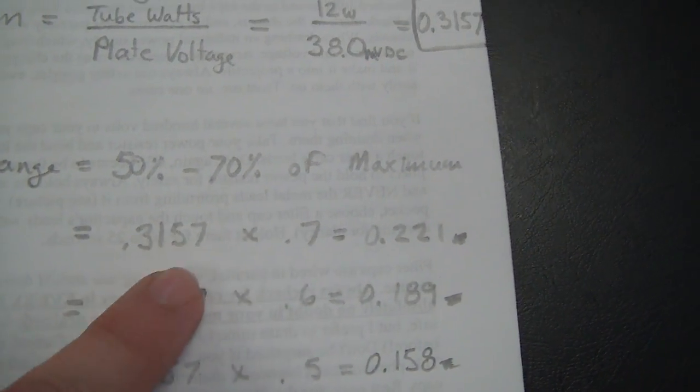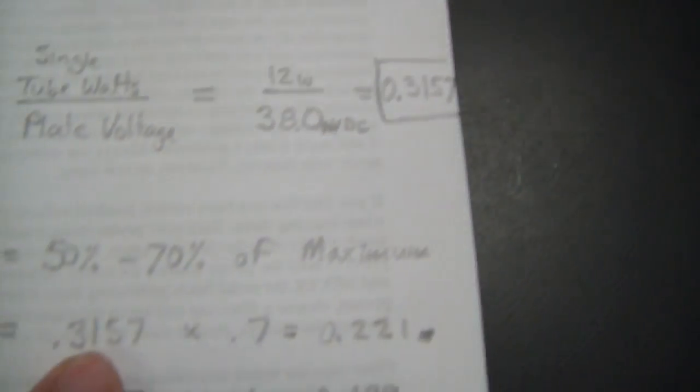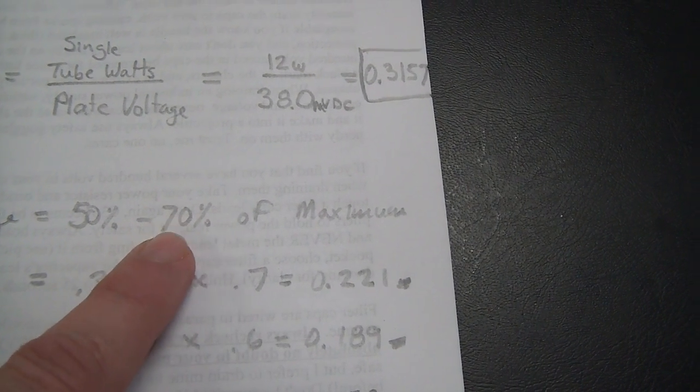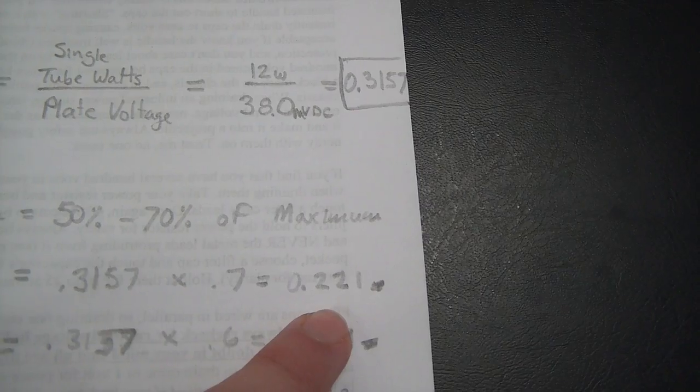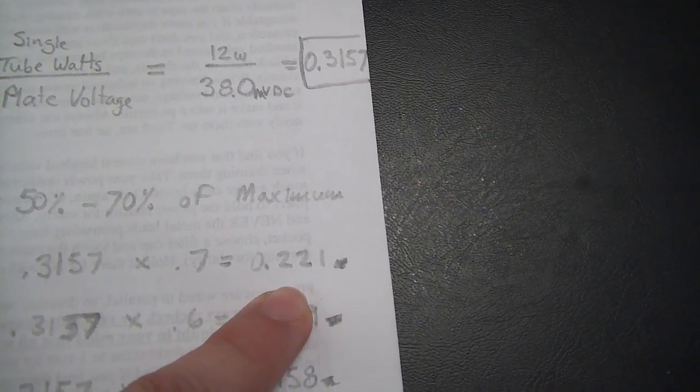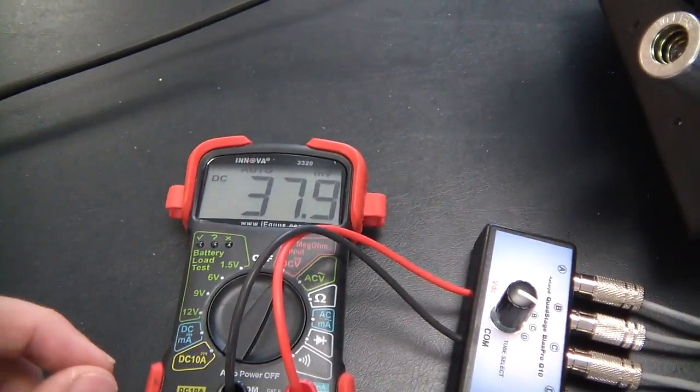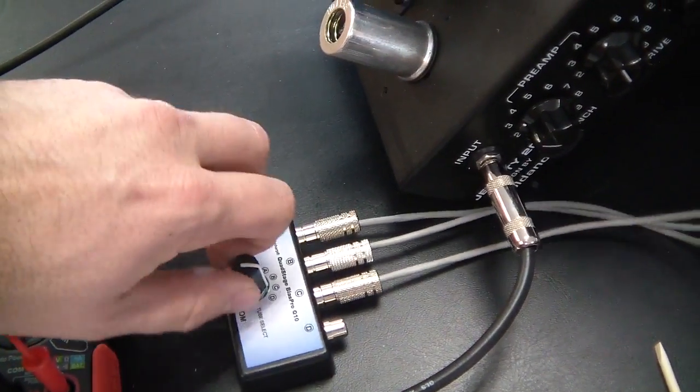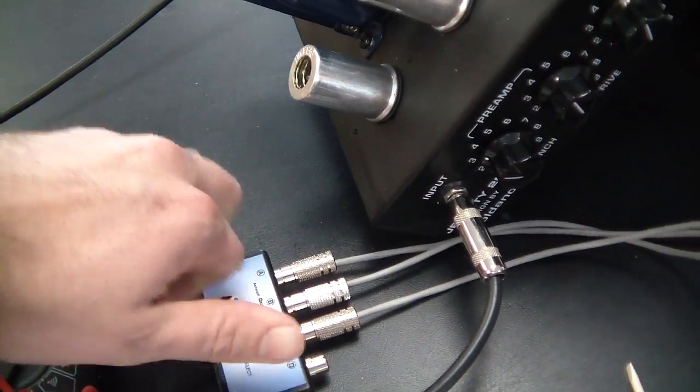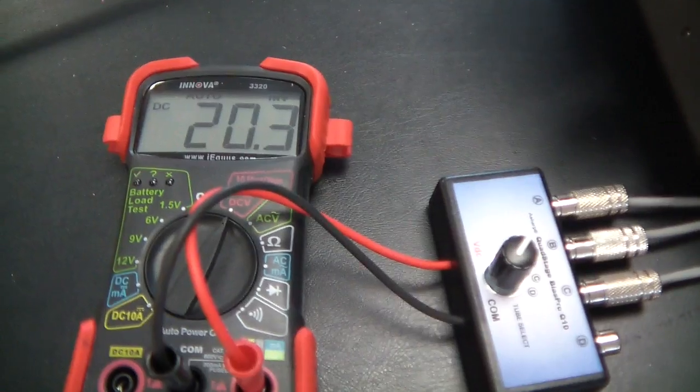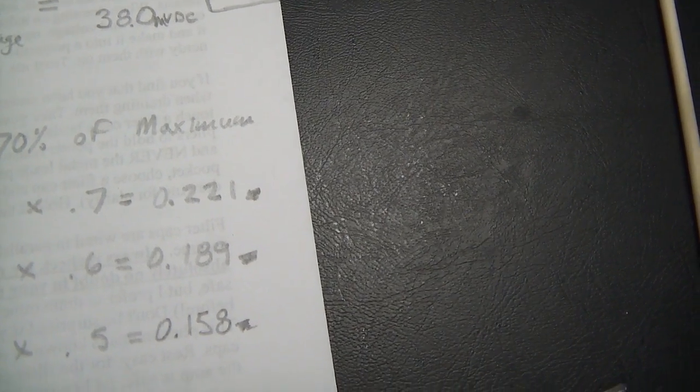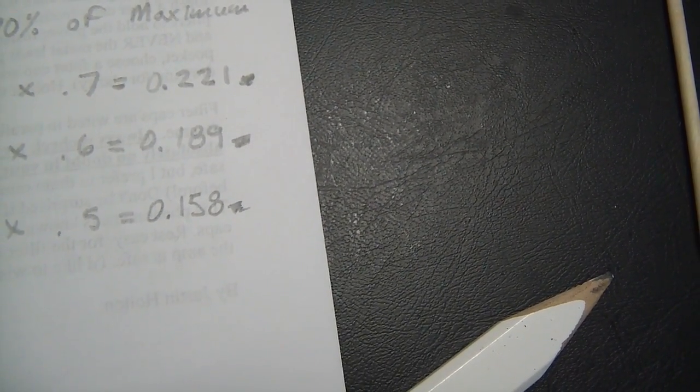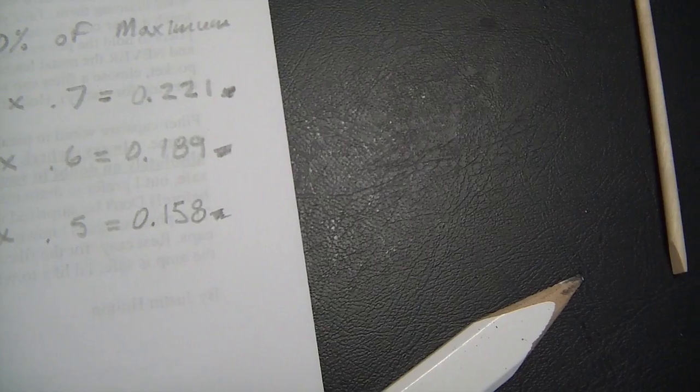And so that's the maximum and I'm multiplying by 0.7, 0.7 would be the 70 percent mark and that's going to give me 22.1. And so on my bias tool I'm going to switch it to the first tube. I've got it set at 20.3. Remember we were looking for, so the maximum is 22.1 and then the lower end of the operating range is 15.8.